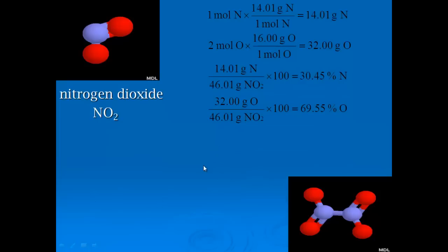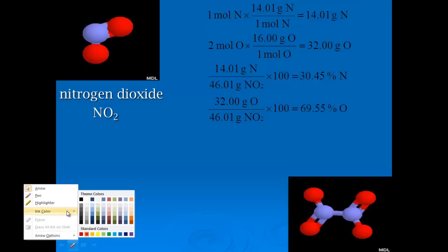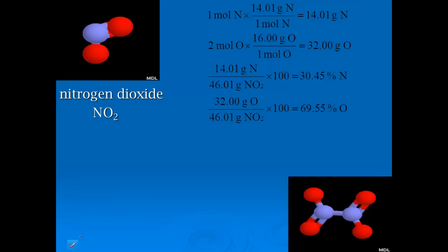Nitrogen dioxide is NO2, and the percent composition would be like this. You go moles to grams, find the total for nitrogen and oxygen. There's two oxygens, one nitrogen, divided by the total. I figure out 30.45% is nitrogen, 69.55% is oxygen. If I double check it, they both add back up to 100, so I know I've done the math right.